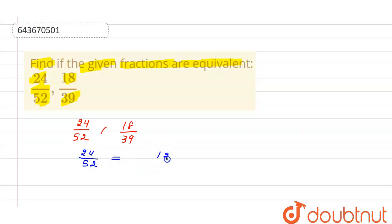2 into 12 is 24, 2 into 26 is 52. Next we can cancel it with the table of 2: 2 into 6 is 12, 2 into 13 is 26.